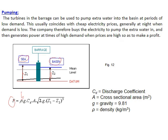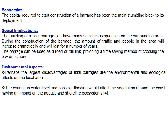The tidal power formula includes ρ (density in kg/m³), g (gravity), Cd (discharge coefficient), A (cross-sectional area of the water passage), and (z1 − z2) representing the difference in water levels between the sea and the basin. Capital cost is high but is recovered over time.